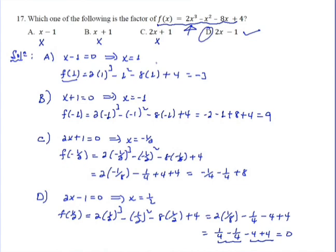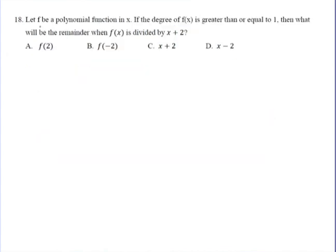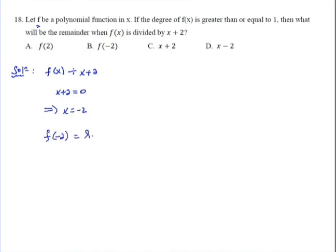Let f be a polynomial function of x. If the degree of f of x is greater than or equal to 1, then the remainder when f of x is divided by x plus 2 will be obtained by evaluating the function at x equals minus 2.